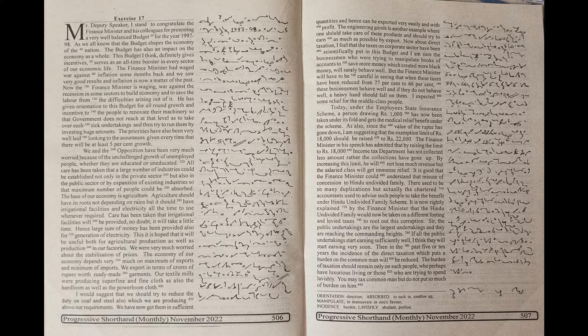I feel that the taxes on corporate sector have been scientifically put in this budget and I am sure the businessmen who were trying to manipulate books of accounts to save more money which created more black money will surely behave well. But the finance minister will have to be careful in seeing that when these taxes have been reduced from 77% to 66% these businessmen behave well and if they do not behave well a heavy hand should fall on them. I expected some relief for the middle class people.